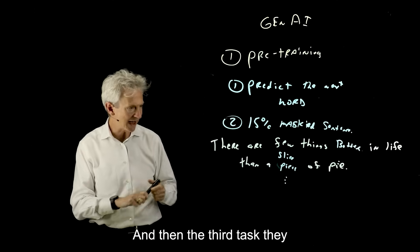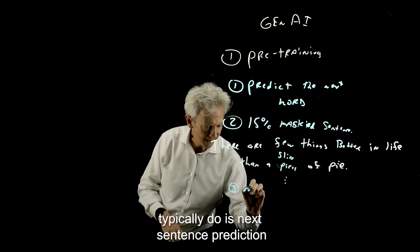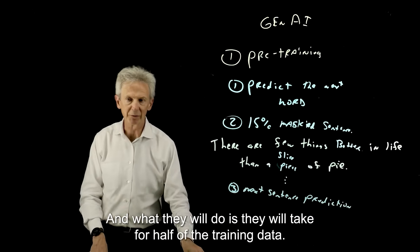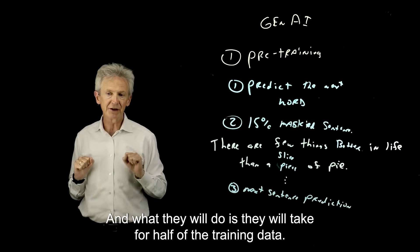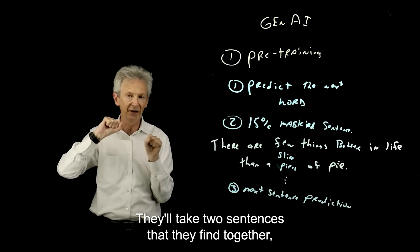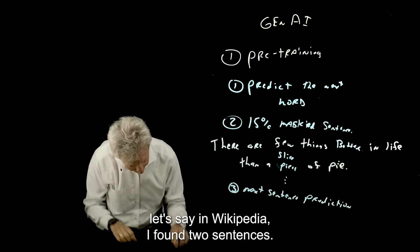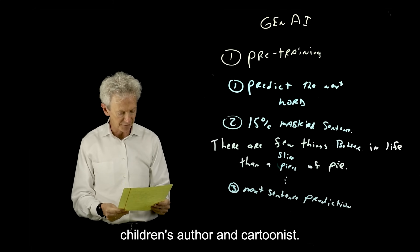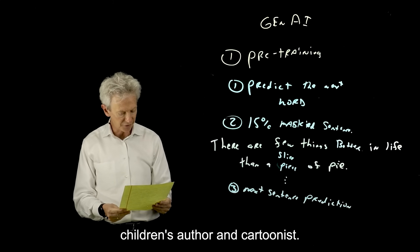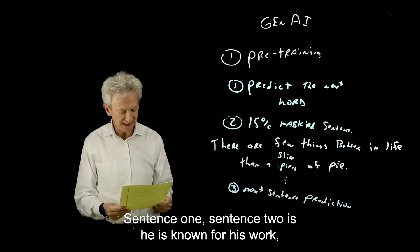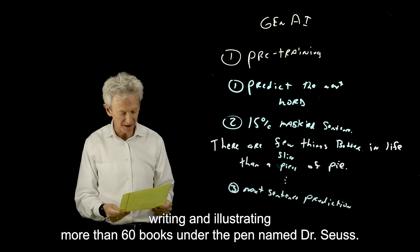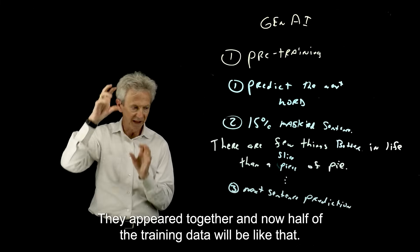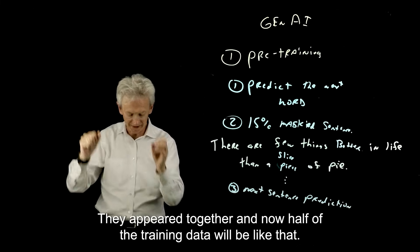And then the third task they typically do is next sentence prediction. And what they will do is they will take, for half of the training data, they'll take two sentences that they find together. Let's say in Wikipedia, I found two sentences. Theodore Seuss Geisel was an American children's author and cartoonist. Sentence one. Sentence two is, he is known for his work writing and illustrating more than 60 books under the pen name Dr. Seuss. So these are two sentences. They appeared together and half of the training data will be like that.